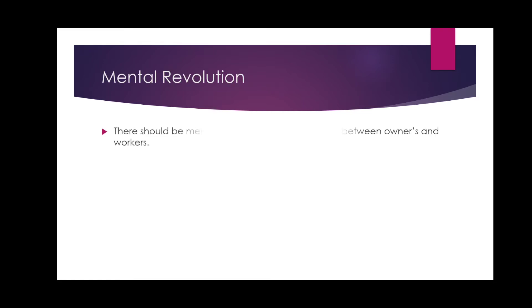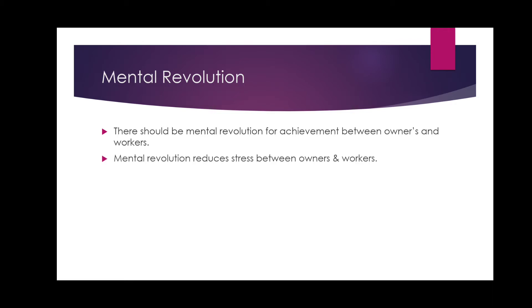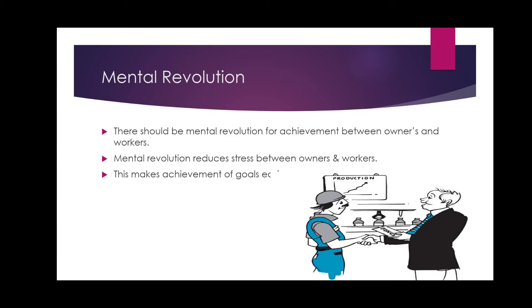Mental revolution — this is the last point. There should be a mental revolution for achievement between owners and workers. Workers and owners are two groups in any business, and conflicts keep happening between them. Ensuring that this conflict does not occur and stress does not increase is what mental revolution is about. This makes achievement of goals easy — if workers and owners are not working only for their own benefit but working together, then goals will be easily achieved. Owners give bonuses to workers for good production, creating a conducive atmosphere where the business can grow.